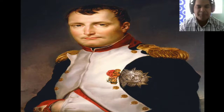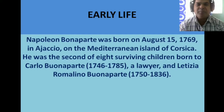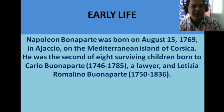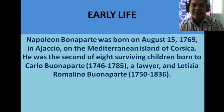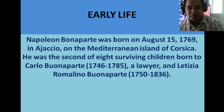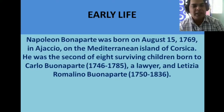Napoleon Bonaparte was born on August 15, 1769, in Ajaccio on the Mediterranean island of Corsica. He was the second of eight surviving children born to Carlo Bonaparte, his father, who was a lawyer, and Letizia Ramolino Bonaparte, his mother. His mother died in 1836 and his father died in 1785.